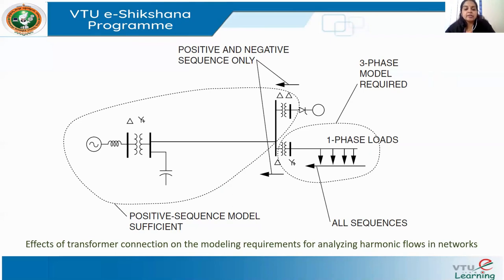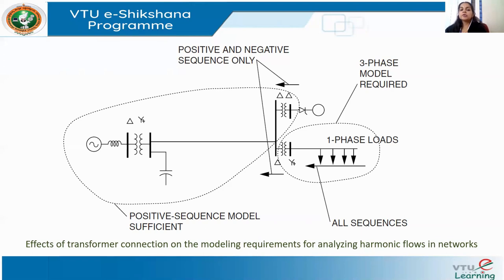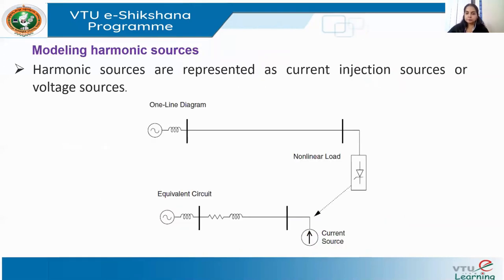So we saw how to model the system: to what extent we need to build the system model, and when to choose a single-phase versus three-phase model. Now we move to modeling harmonic sources. All harmonic sources are nonlinear elements in the system and are generally considered to be injection sources into the linear network model.